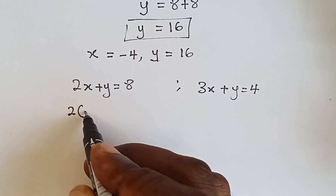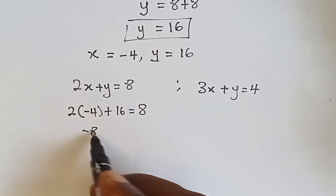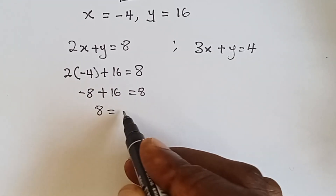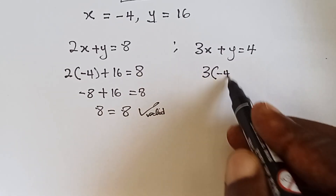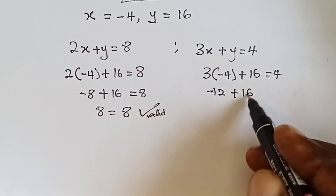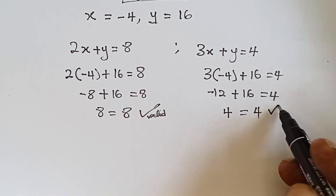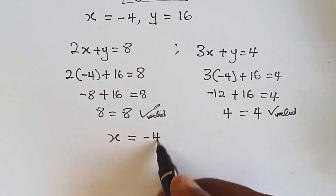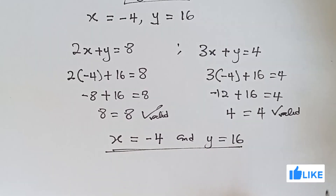For equation one: two times minus four plus 16 — that is minus eight plus 16 equals eight. Eight equals eight — this is valid. For equation two: three times minus four plus 16 — that is minus 12 plus 16 equals four. Four equals four — this is also valid. So our answer x equals minus four and y equals 16 is correct.